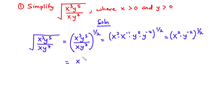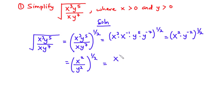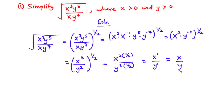We can write this as x exponent 2 divided by y exponent 2, all raised to 1 over 2. Distributing the exponent gives x exponent 2 times 1 over 2, divided by y exponent 2 times 1 over 2. This becomes x exponent 1 over y exponent 1, which is the same as x over y. After simplifying, our final answer is x over y.